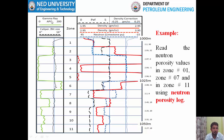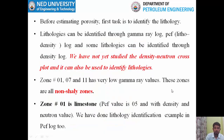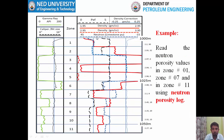On track number 1 you have gamma ray, caliper, and bit size. On track numbers 2 and 3 combined you have density and neutron log. On track number 2 you have the PEF log, and on track number 3 you have the density correction log. We are studying only the neutron log in this log section. You have been asked to calculate the neutron porosity values in zone number 1, zone number 7, and zone number 11.